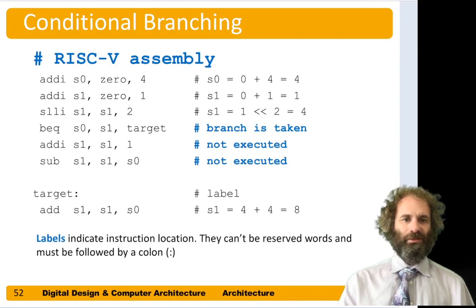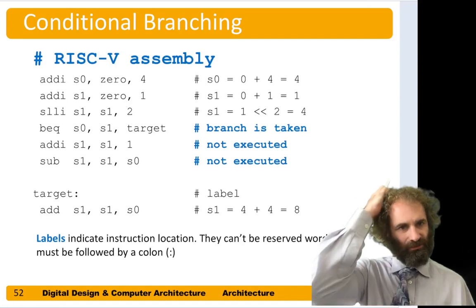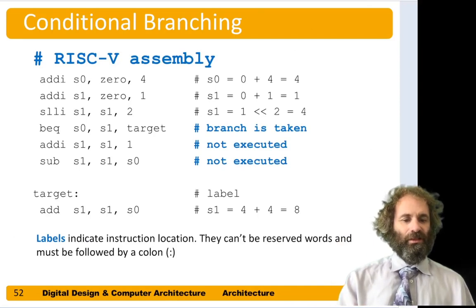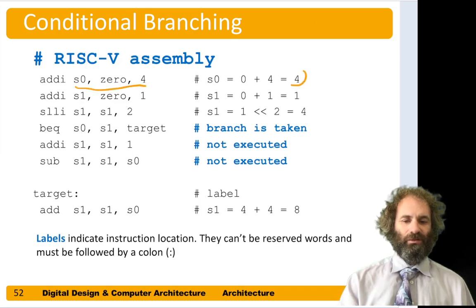So let's start with some conditional branches. Suppose we wanted to do a program like this, where first we add immediate S0 gets 0 plus 4, so S0 is getting 4. Add immediate S1 gets 0 plus 1, so now S1 gets 1. Shift left logical immediate S1 gets S1 shifted by 2. So 1 shifted left by 2 gets 4. So now S0 and S1 are equal.